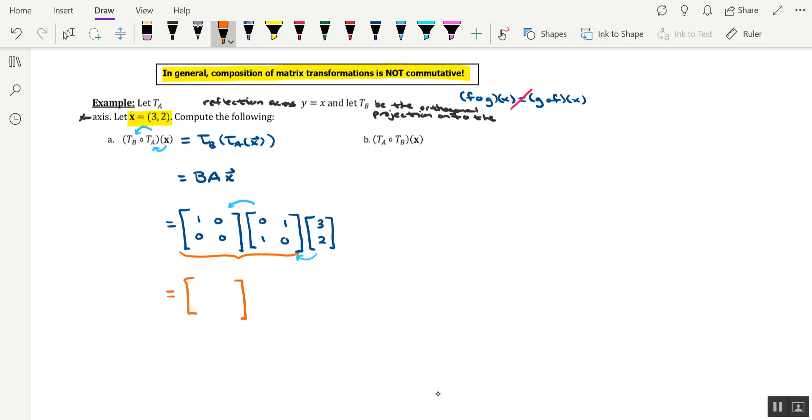Multiplying the matrix B to A will give you the following entries. We'll have 0, then 1 in the top row, then 0 and 0 in the bottom row.